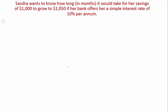Let's start writing out what we have. You have your principal which is $1,000. You have your future value which is $1,050. And you have your simple interest rate which is 10% per annum. And that means you want to find time.